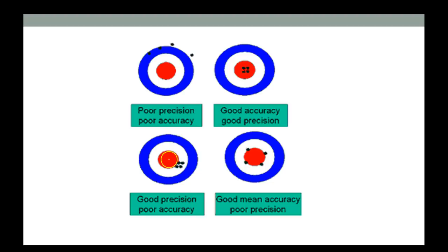Another scenario is all over the place — no good precision and no good accuracy. The last one, on average, hits in the middle, so it has good average accuracy but not great precision.